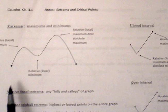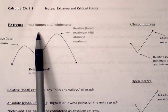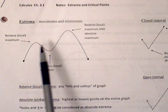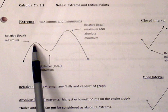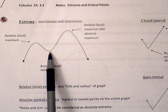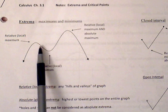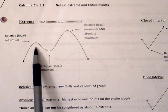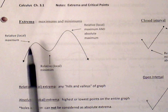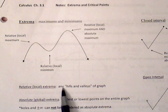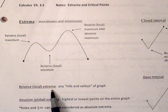Extrema is simply the max and mins of a graph. So here we have a relative maximum, a relative minimum, and a relative maximum here. Any hills and valleys will be considered a relative or local extrema.